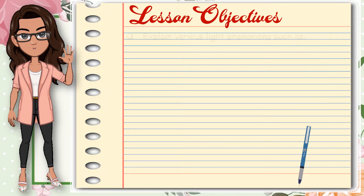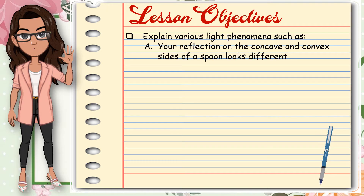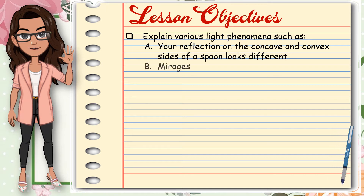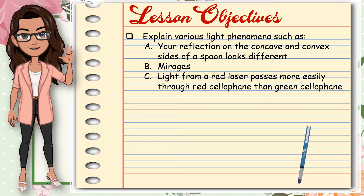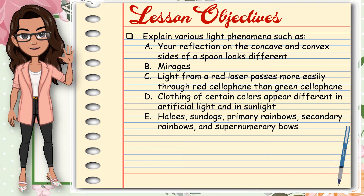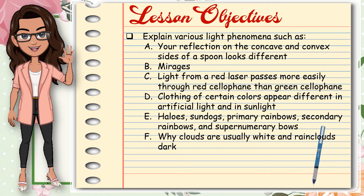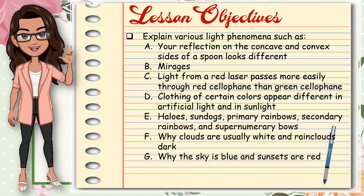At the end of this module, you are expected to explain various light phenomena such as your reflection on the concave and convex sides of a spoon that looks different, mirage, light from a red laser passes more easily through red cellophane than green cellophane, clothing of certain colors appearing different in artificial light and in sunlight, halo, sun dogs, primary rainbows, secondary rainbows, and supernumerary bows, why clouds are usually white and rain clouds dark, and why the sky is blue and sunsets are red.